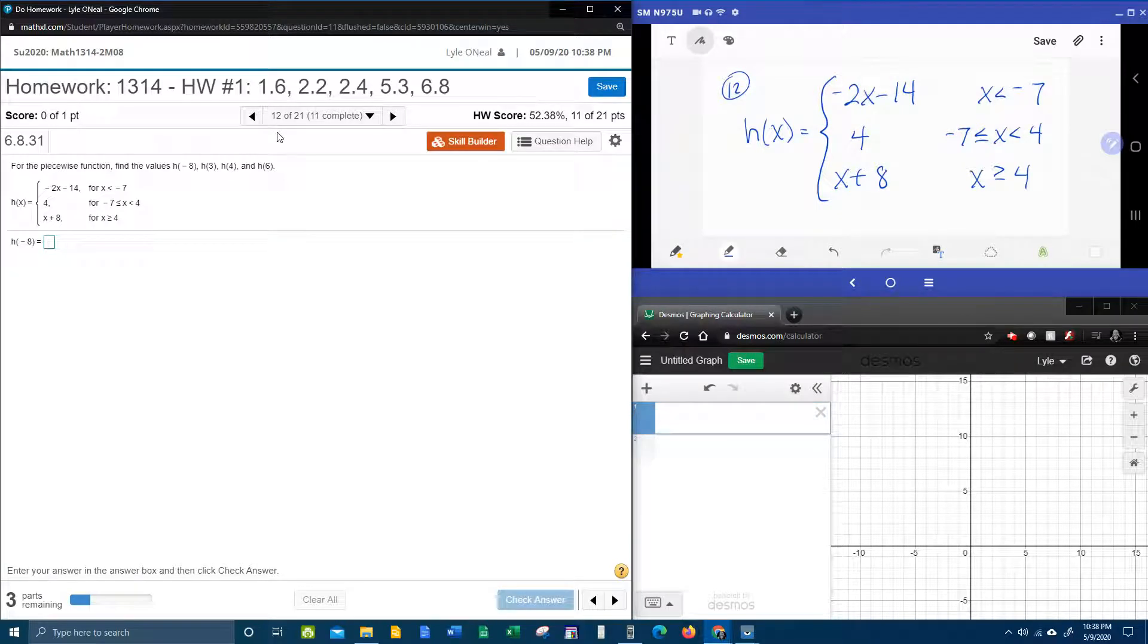All right, here we go. Question number 12 from our college algebra homework number one in my lab math. For the piecewise function, find the function values one, two, three.